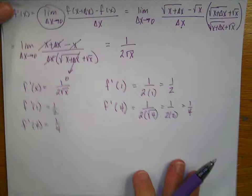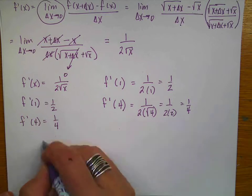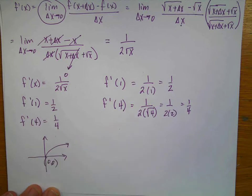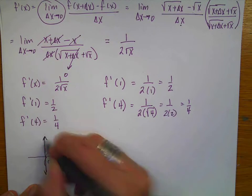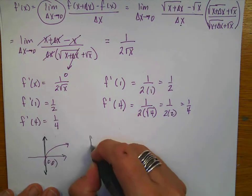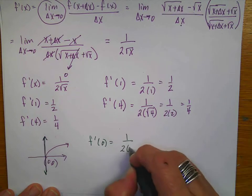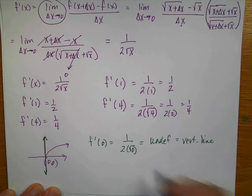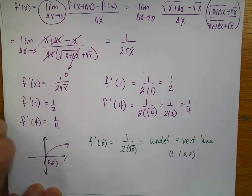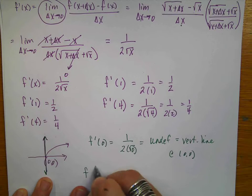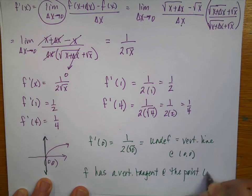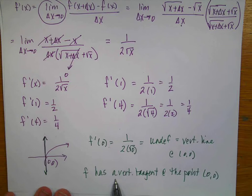Looking at the graph to answer the last question: at the point (0,0), notice there would be a vertical tangent. If I try to evaluate f prime of 0, I get 1 over 2 times the square root of 0, which is undefined. This verifies a vertical tangent line at the point (0,0). Since the problem said 'discuss,' my solution would be: f has a vertical tangent at the point (0,0), and both the undefined derivative and the graph together comprise the full discussion.